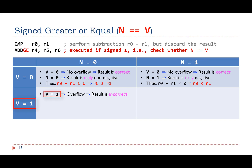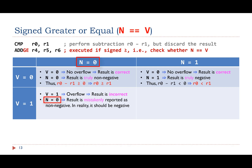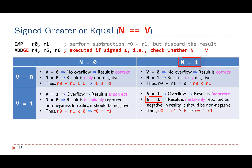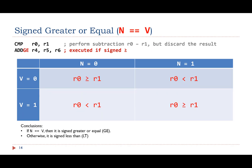On the other hand, if V is 1, an overflow has taken place, indicating the subtraction result is incorrect. If N is 0, the N flag mistakenly reports the result as non-negative, when in reality it should be negative. Therefore, R0 is signed less than R1. Similarly, if N is 1, the subtraction result is mistakenly reported as negative while it should be non-negative; thus R0 is signed greater than or equal to R1. This truth table summarizes the conclusion: R0 is signed greater than or equal to R1 if and only if the overflow flag V and the negative flag N are equal to each other.